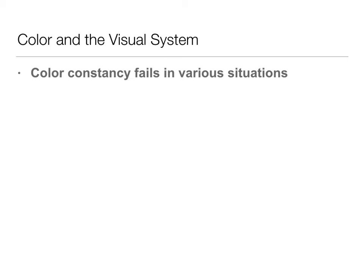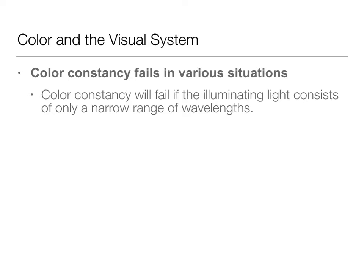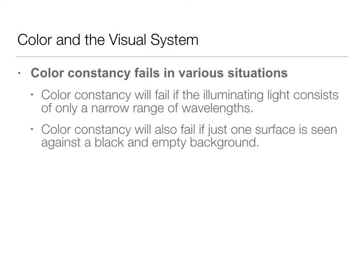But color constancy can fail, and this usually happens when the illuminating light is very, very narrow. If you're seeing things in a blue light or a red light, we're only allowing a very, very narrow range of wavelengths. Color constancy can also fail if just one surface is seen against a black and empty background.